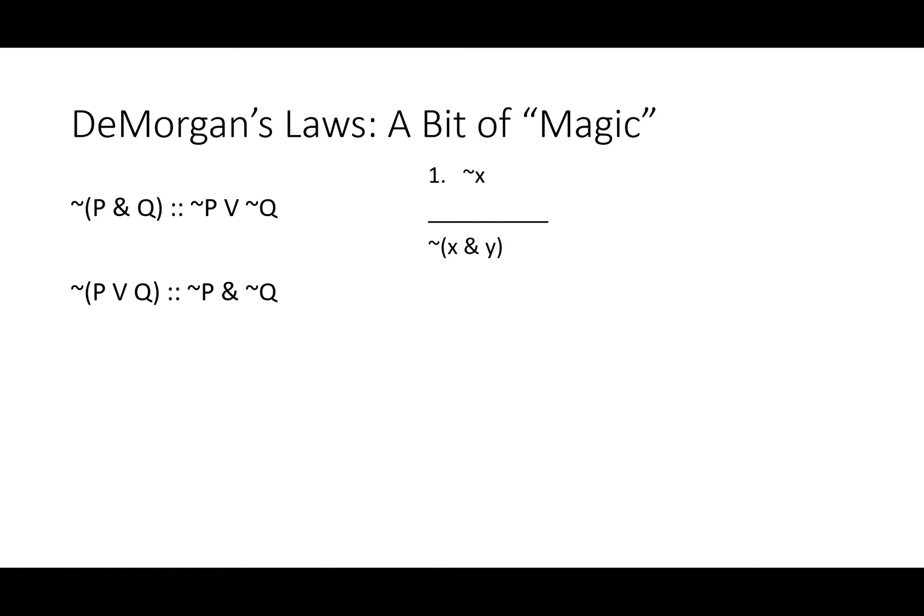DeMorgan's laws let you do some surprising things, a little bit of logical magic when combined with addition or double negation or both. When we look at something like this, not X, we should know that it's not the case that X and Y is also true because this half of the ampersand is false. Half of an ampersand being false means the whole thing is false.